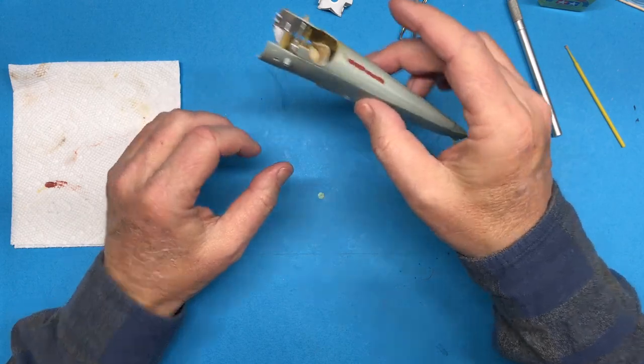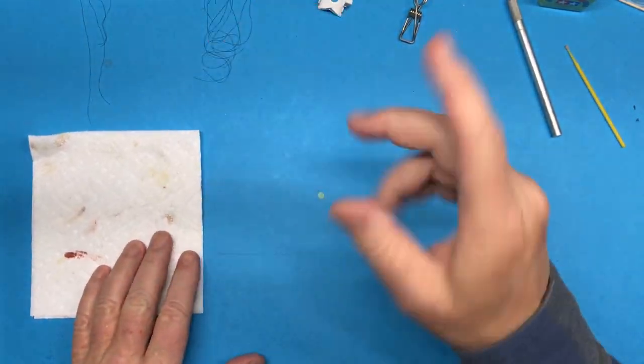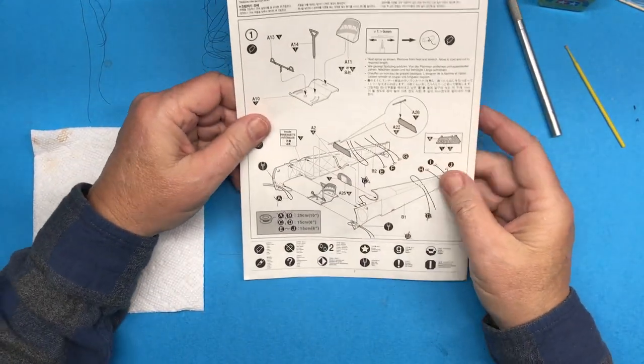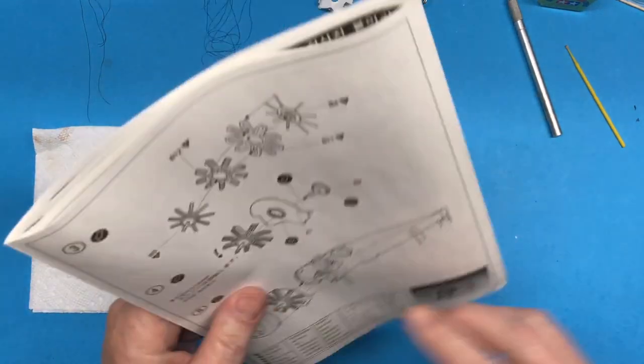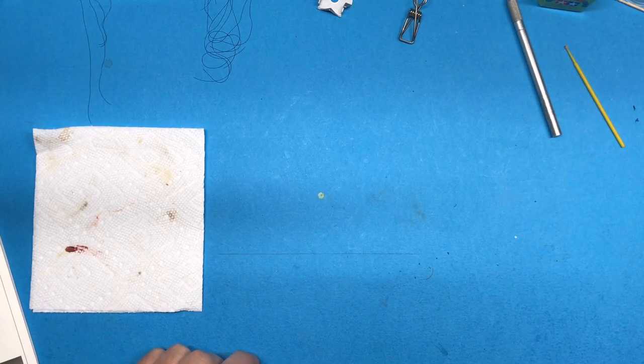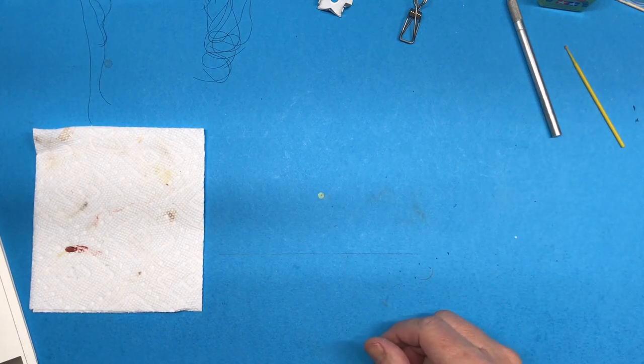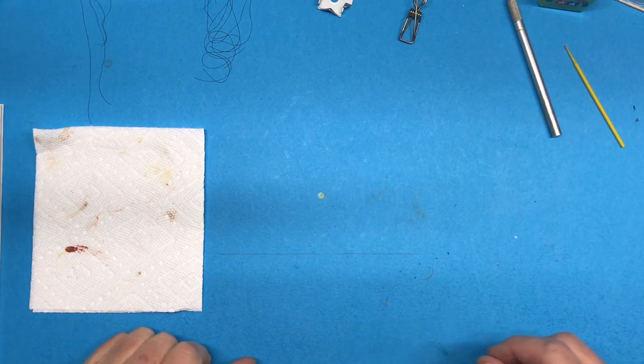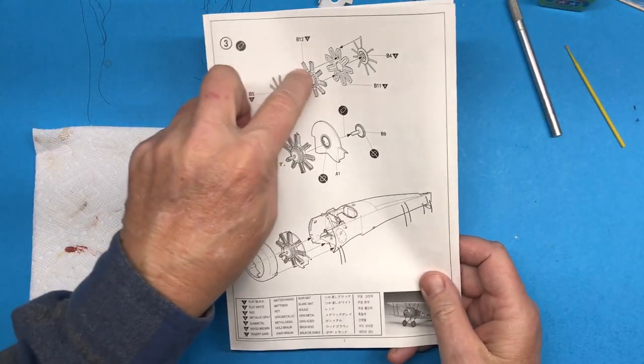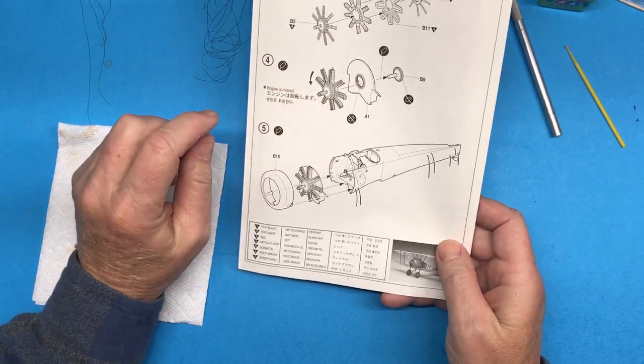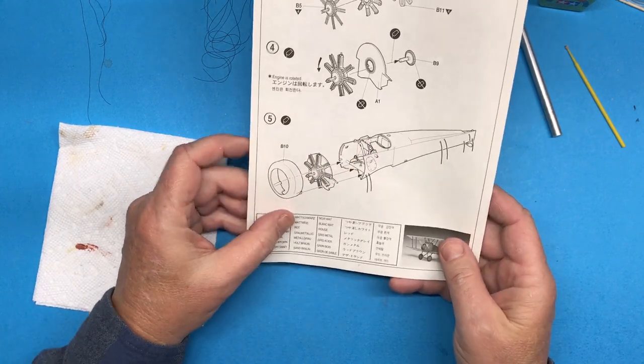I'm going to let that cure up really well and then I'll sand it once it's dried and I can move on. That will complete the entirety of step number one. I think I'm going to end this one here with step one. Next time, come back with step two, get into the engine firewall and attaching those parts onto the front of the aircraft.